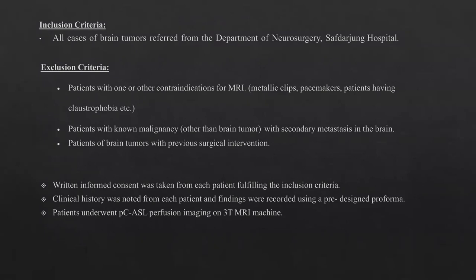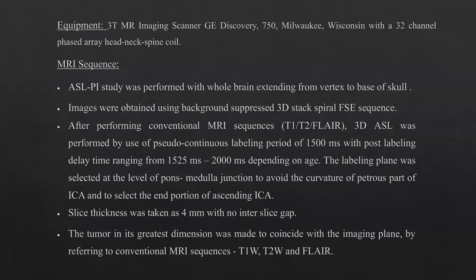Written informed consent was taken from each patient, and clinical history was recorded on a pre-designed proforma. Patients underwent pseudocontinuous arterial spin labeling perfusion imaging on a 3-Tesla MRI machine. The ASL perfusion study covered the whole brain from vertex to base of skull using a background-suppressed 3D stack spiral FAC sequence. After conventional MRI sequences — T1, T2, and FLAIR — 3D ASL was performed with a pseudocontinuous labeling period of 1500 milliseconds and post-labeling delay ranging from 1525 to 2000 milliseconds depending on patient age. The labeling plane was selected at the level of the pontomedullary junction to avoid the curvature of the petrous part of the ICA and to select the end portion of the ascending ICA.